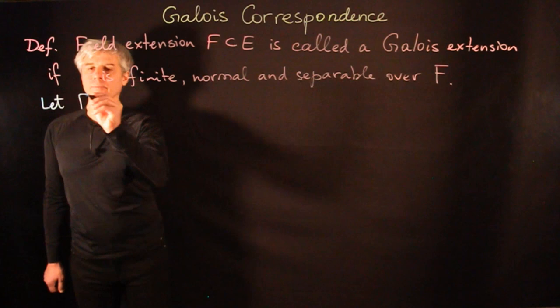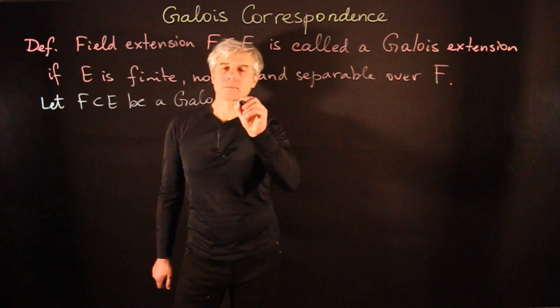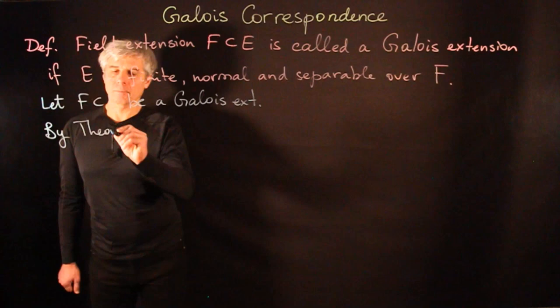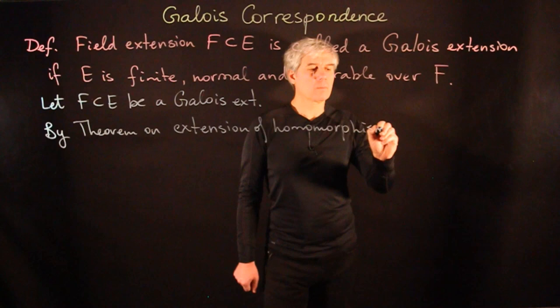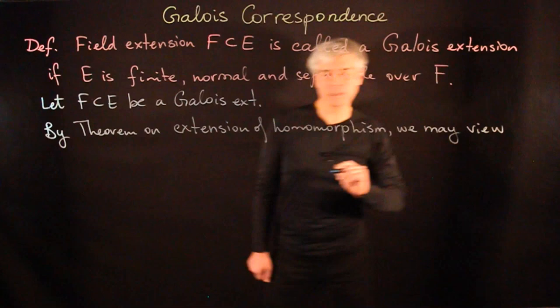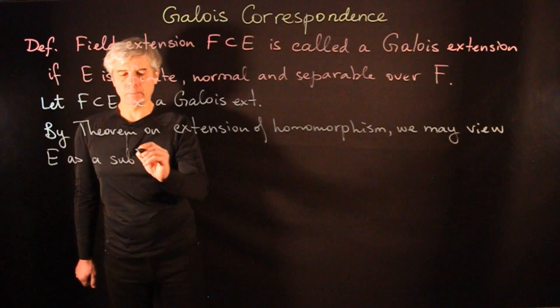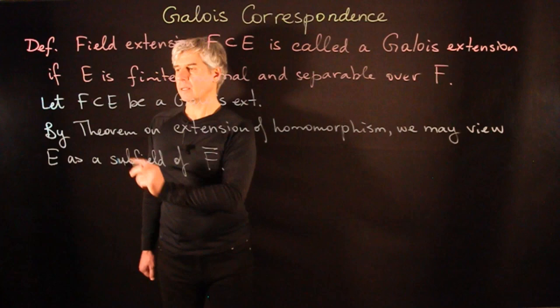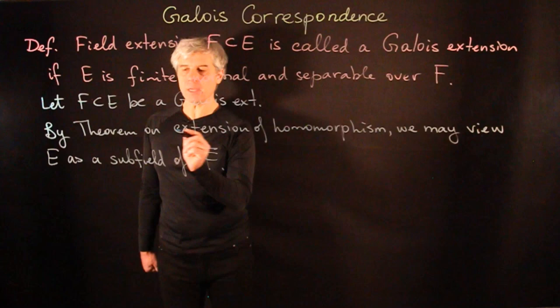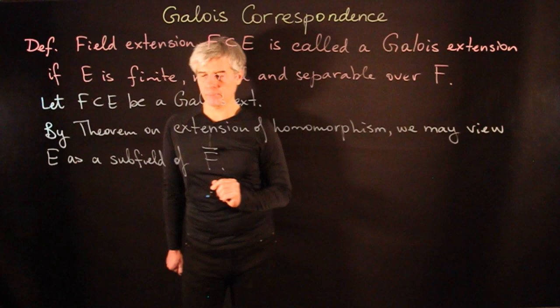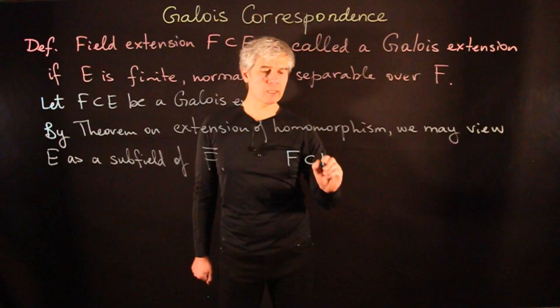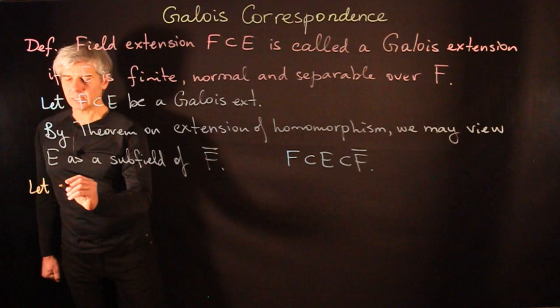If we consider such an extension, by the theorem on extensions of homomorphisms, we may view E as a subfield of the algebraic closure of F. Clearly, F may be embedded in its algebraic closure, and since E is a finite algebraic extension, we can extend the embedding of F into F-bar to an embedding of E into F-bar. By fixing such an embedding, we may consider that F is contained in E and E is contained in F-bar.